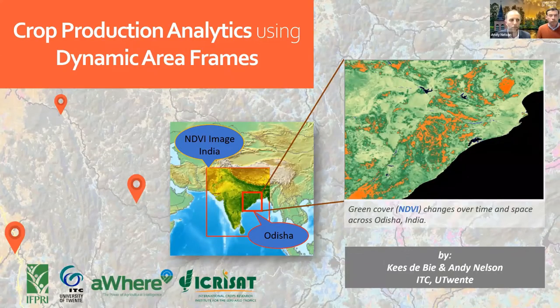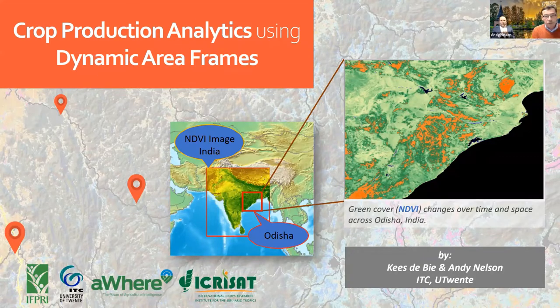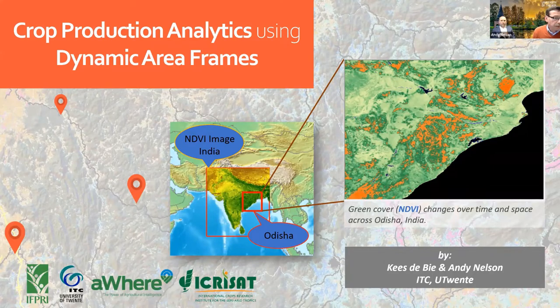Thanks. The study aimed at creating a blended earth observation based and field based method to improve the quality of crop production estimation, where the critical step is the question of how to extrapolate point data from the field on yields to area statistics on production. Normally sampling follows an area frame approach where, by block, a few agri-based villages are selected where crop cut experiments are carried out. Obtained yield data are assumed representative for all villages of the whole block, and with the use of crop area statistics by village, block-specific crop production data are estimated and published.